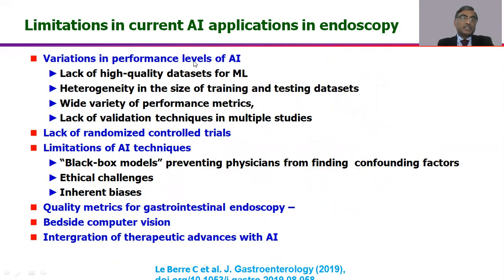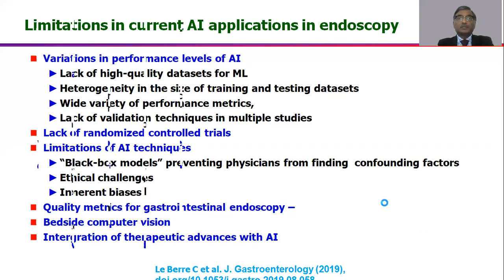There are several limitations with AI systems. There is a lack of good quality datasets, heterogeneity in training and testing strategies, and a wide variety of performance matrices. Very few randomized trials are available, though more are expected in coming years. There is also the black box model limitation, which prevents physicians from identifying confounding factors and thus correcting them. Additionally, there are issues regarding integration of therapeutic advances with these AI softwares.